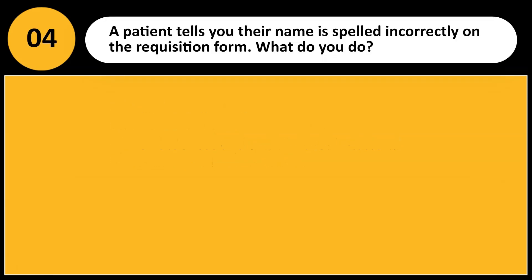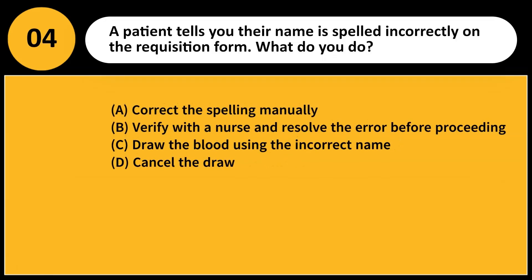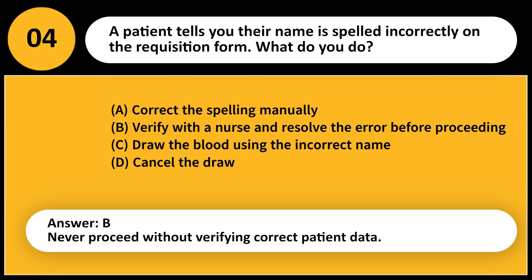A patient tells you their name is spelled incorrectly on the requisition form. What do you do? A. Correct the spelling manually. B. Verify with a nurse and resolve the error before proceeding. C. Draw the blood using the incorrect name. D. Cancel the draw. Answer: B. Never proceed without verifying correct patient data.